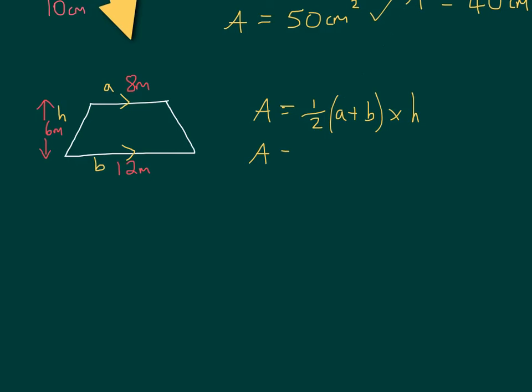So, let's substitute those numbers in. So, I've got half. Now, instead of writing a, I can write 8. And instead of b, well, that's 12. Times my h, my height, is 6. So, this is a good idea here, showing you're working out. And now, I need to do the sum in the brackets first. Because that comes before any other sum when you're looking at the order of doing calculations. So, 8 plus 12 is 20, times 6.